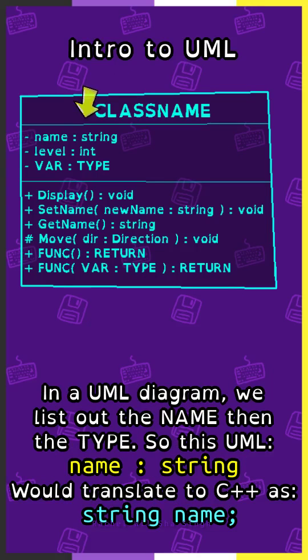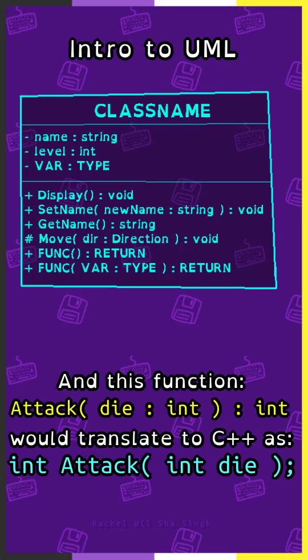In a UML diagram, we list out the name, then the type. So this UML 'name: string' would translate to C++ as 'string name;'. And this function 'attack(): int' would translate to C++ as 'int attack()'.